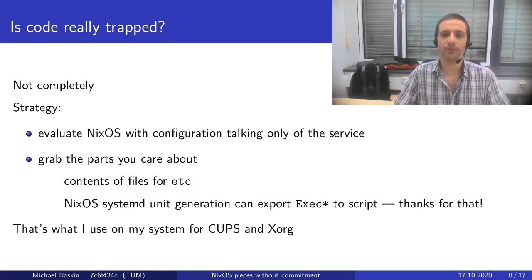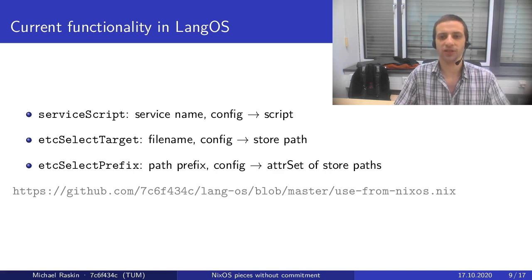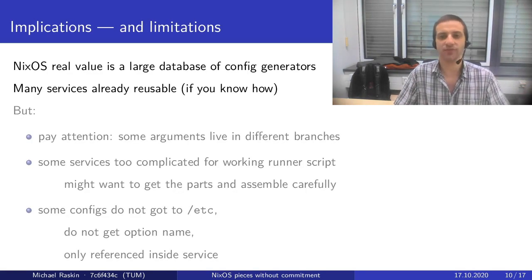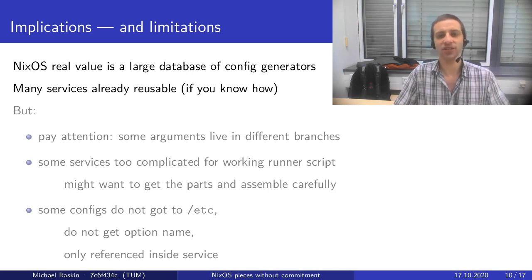I use both of these things on my own system to get CUPS running and to get Xorg configuration. All of this functionality is online and allows you to grab a service script by service name, NixOS configuration, and also /etc files or a bunch of files in /etc. So what are the implications and limitations of these approaches? I claim the main value of NixOS — which would take the most time to replicate, even based on Nix — is a large database of configuration generators for many daemons and programs. Many services are already reusable if you know how to do it.